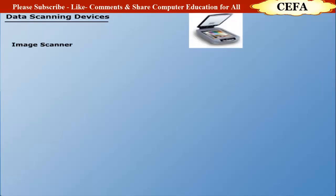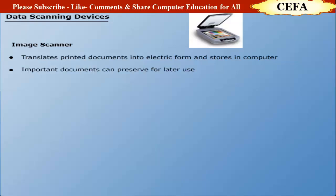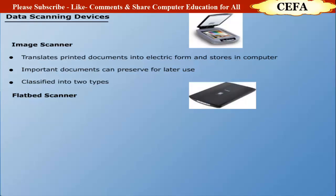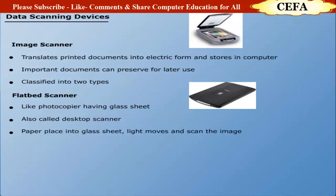Data scanning devices — Image scanner: An image scanner translates printed documents into an electronic format and stores them in the computer. Important documents can be preserved in electronic form for later use. Image scanners are classified into two types: flatbed scanner and handheld scanner. A flatbed scanner is like a photocopier machine with a glass sheet, also called a desktop scanner. The paper is placed on the glass sheet and a light source moves horizontally from one line to another until all lines are completed.